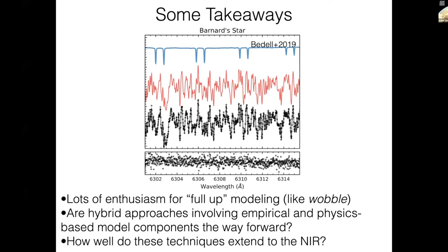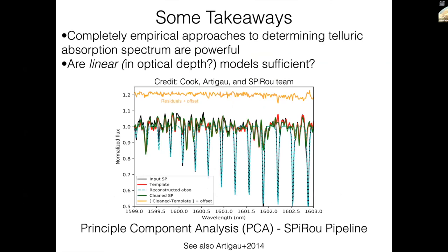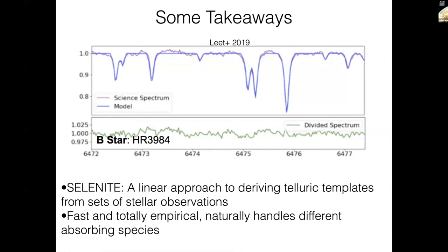There's a lot of enthusiasm for full-up modeling codes like Wobble, but also for hybrid approaches that are both data-driven and involve some of this atomic and molecular physics and atmospheric physics that we can take advantage of. But I think it's a bit of an open question of how well these techniques will extend out to the near infrared where the telluric lines are super numerous. There's a lot of appeal to completely empirical approaches. When I describe the calculation of an atmospheric transmission model, I talked about summing optical depth over layers of Earth's atmosphere as a function of wavelength. When I think of summing optical depth, something like principal component analysis comes immediately to mind, and there's been some really nice work on this. The SPLEEF routine, paper by Artigau et al. in 2014, and this beautiful plot showing a correction of relatively deep, tens of percent telluric lines here and getting quite good results using data-driven linear models. Similar to that, a very nice code called Selenite by Leet et al., 2019. This is an approach where you have a number of observations at a range of barycentric velocities, and you're deriving the underlying telluric spectrum. This approach is nice in that it's very fast, it's totally empirical, and it naturally handles different absorbing species.